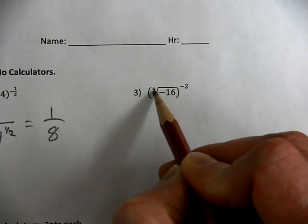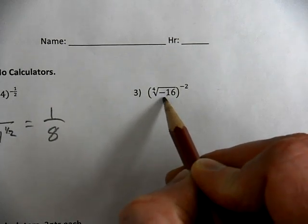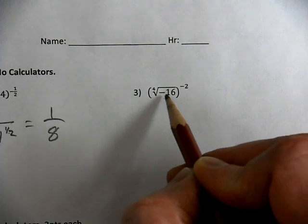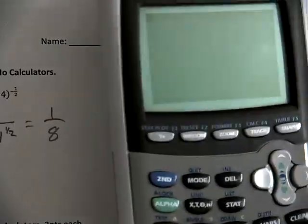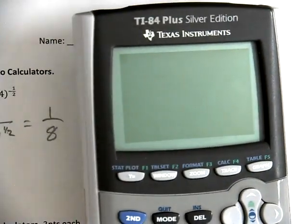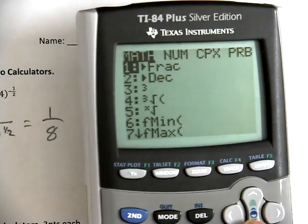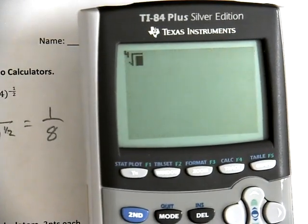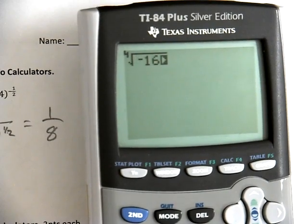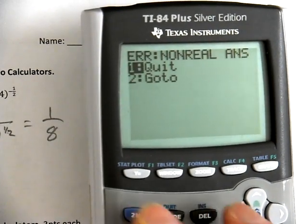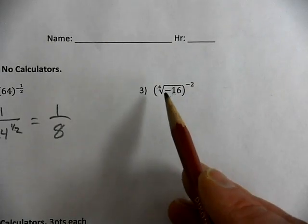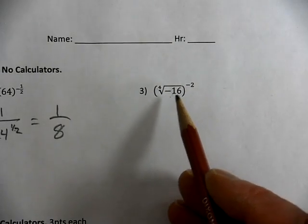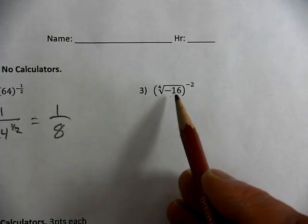Here, we're taking the 4th root of a negative number. Well, you can't take the 4th root of a negative number. The 4th root, hit math, down to 5. The 4th root of a negative number will get you an error. Nothing times itself 4 times is going to be a negative answer.